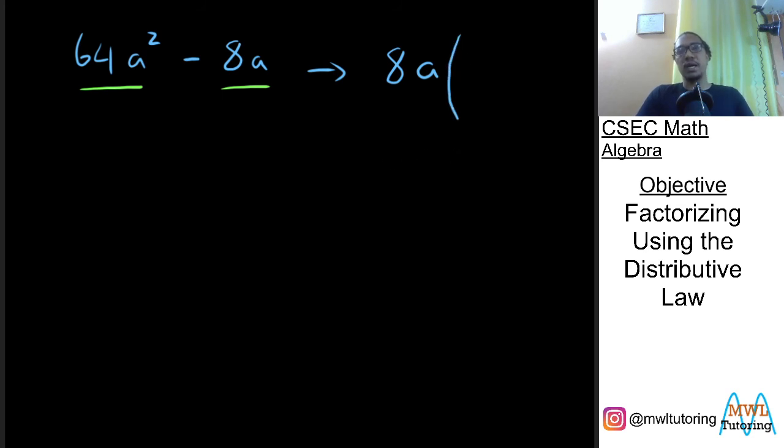And we need to fill our brackets so we ask ourselves the next question. What do I need to put inside the brackets so that when I expand I get what I started off with. Now if I want to get back 64a squared then I need to multiply 8a by another 8a. Because 8 by 8 is 64 and a by a is a squared.